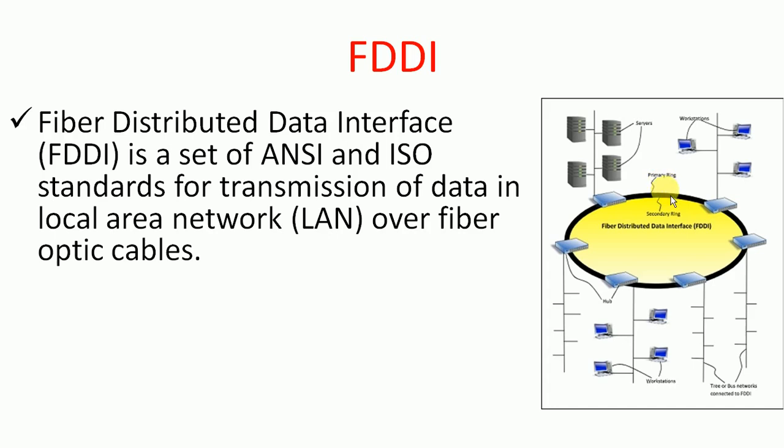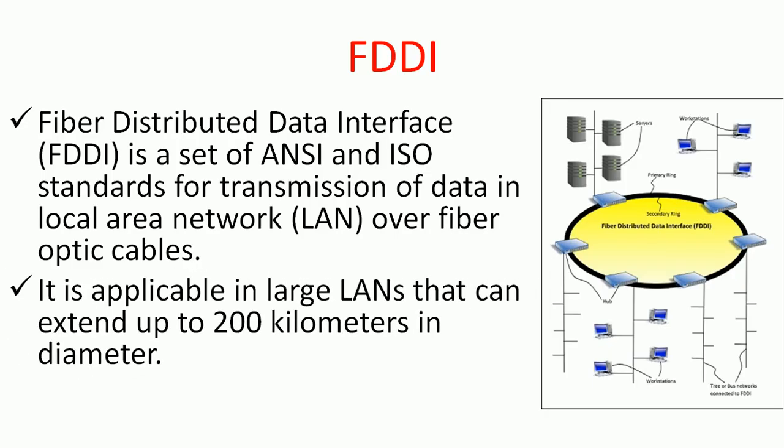FDDI contains two rings: a primary ring and a secondary ring. It is applicable in large LANs that can extend up to 200 kilometers in diameter, which is a much larger coverage area.